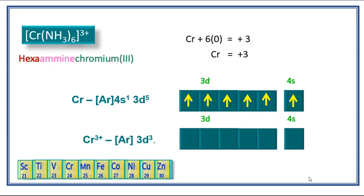Its oxidation state is plus three, so we have to remove three electrons from the valence orbital. After removal of three electrons from the valence orbital, its valence electronic configuration becomes 3d3.